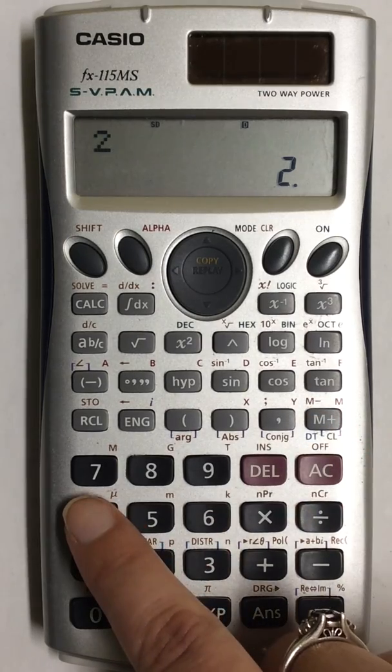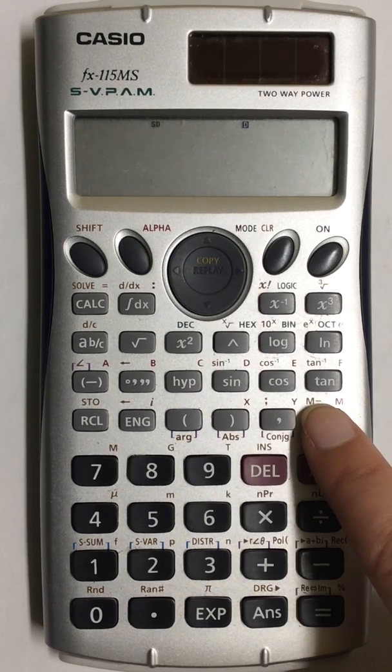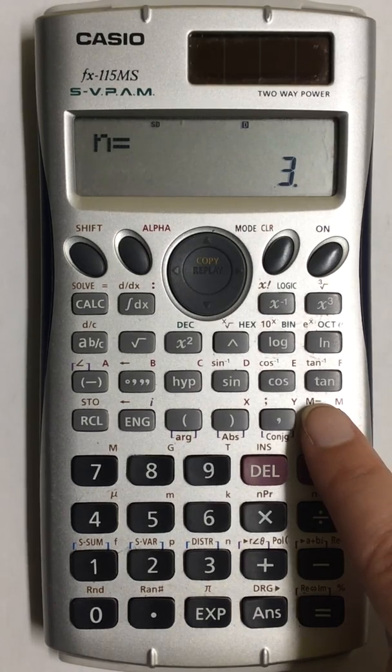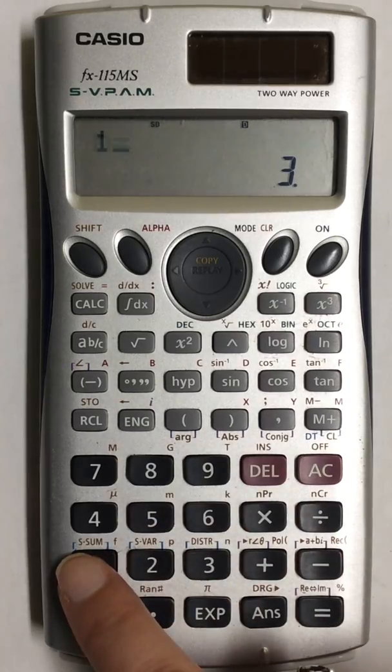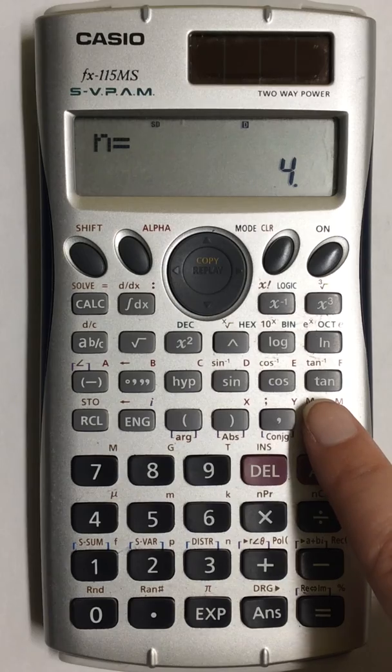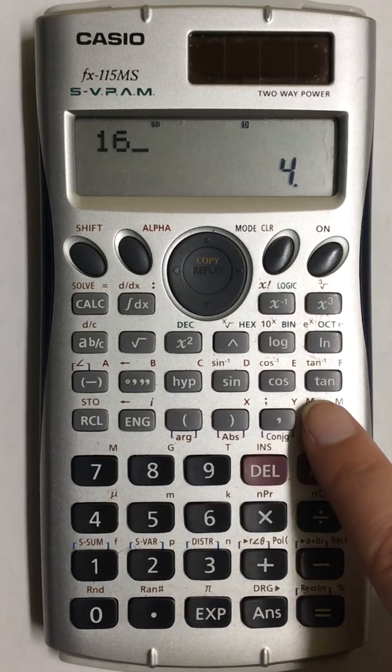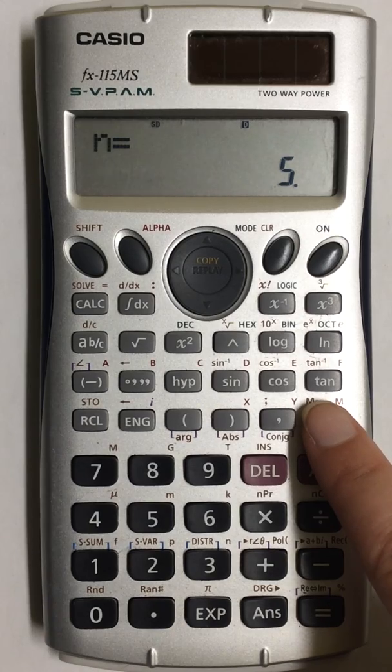I enter my next value and press M plus. N equals 3. And I'm going to keep entering numbers and pressing M plus after each one. And that will enter the values into my calculator.